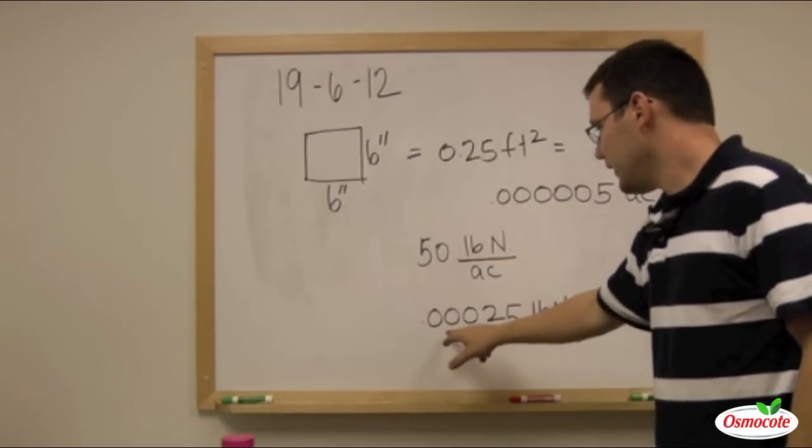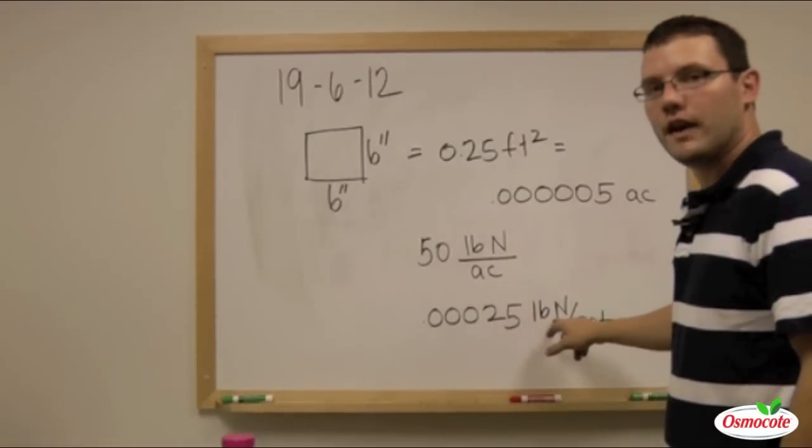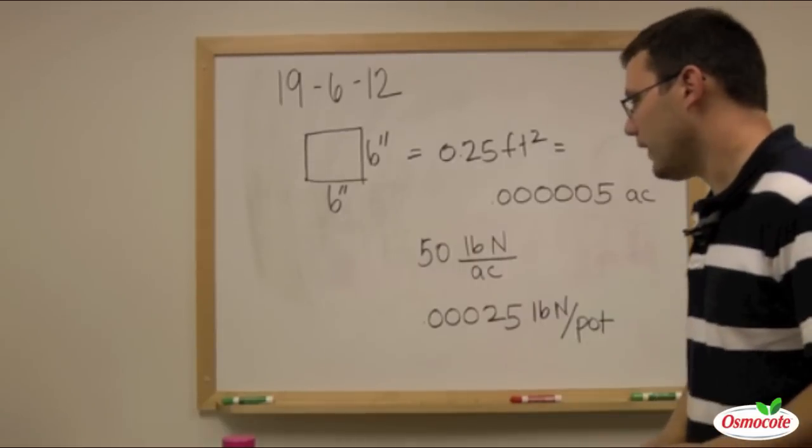then we end up with 0.00025 pounds of nitrogen per pot. That's how many pounds of nitrogen that we want to place in that pot.